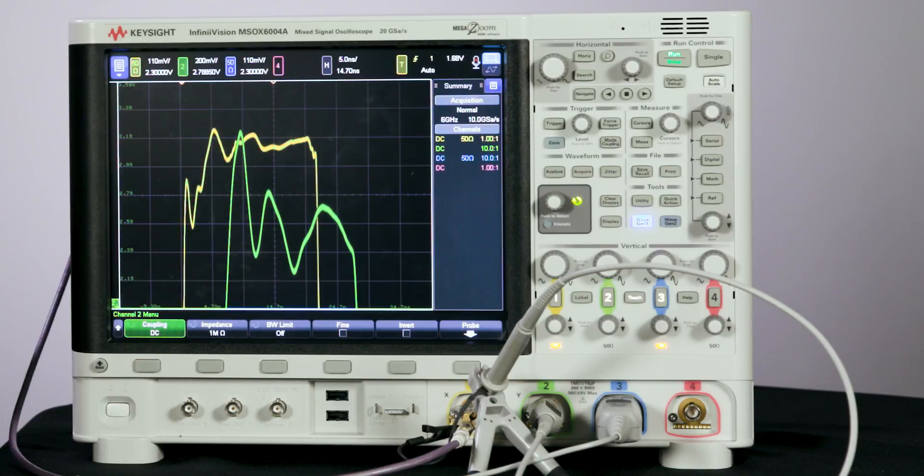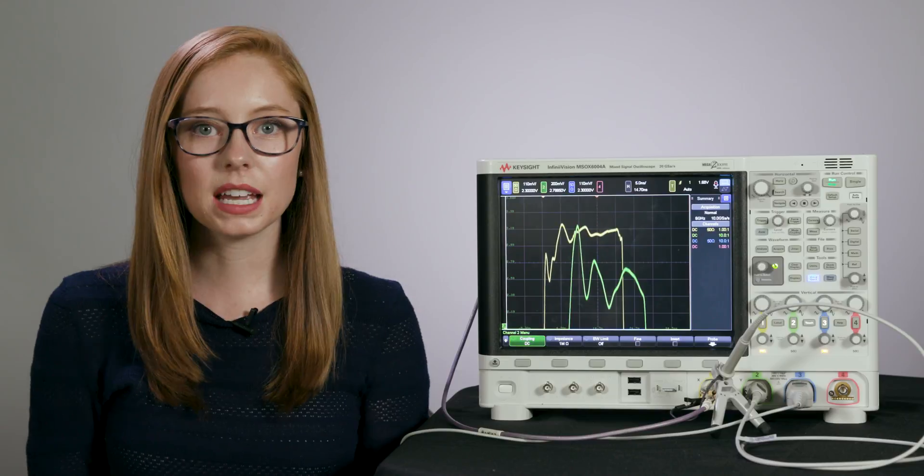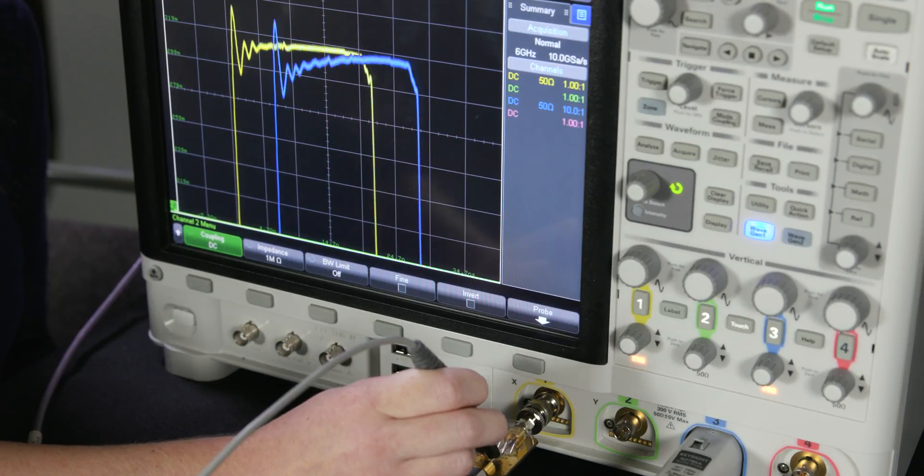These high-frequency components are being filtered out of the signal on our device and are showing up on the oscilloscope screen. Because the capacitance of the passive probe is much higher than that of the active probe, the passive probe's loading effect is significant and the active probe's loading effect is minimal.